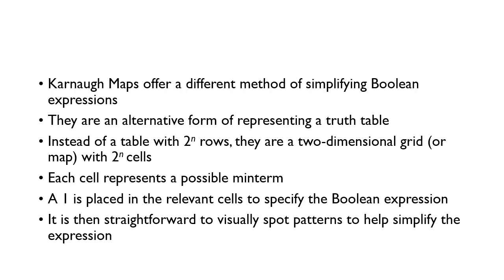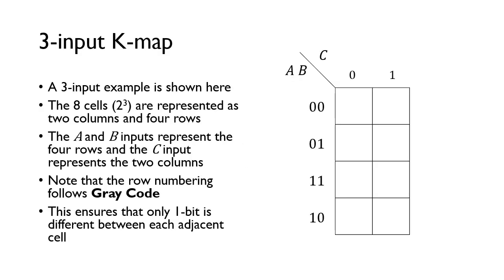Each cell in the Karnaugh map represents a possible minterm, just as a row in the truth table represents a minterm. With a truth table we put 1s in the output column to specify the Boolean expression; with a Karnaugh map we put a 1 in the relevant cell. The map is designed in such a way that makes it straightforward to visually spot patterns to help simplify the expression. We're going to be focusing on 3-input expressions plotted on the 3-input Karnaugh map.